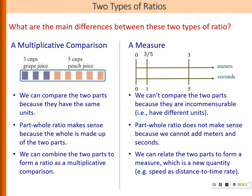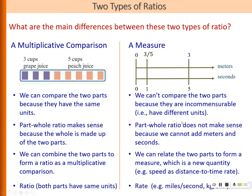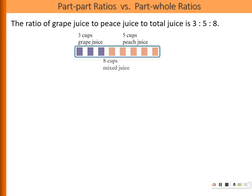When we use a ratio as a measure, we are interested in the unit rate — in this case, how many meters in one second, which is three-fifths meters per second. Some books differentiate between these two types of ratios: they call a multiplicative comparison a ratio, whereas they call a measure a rate. So as long as the two quantities have different units, some textbooks just call it a rate.